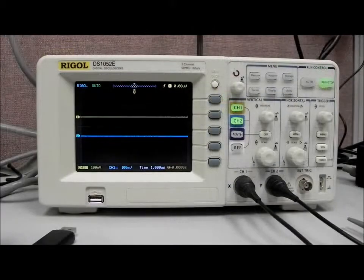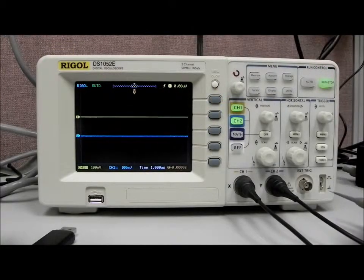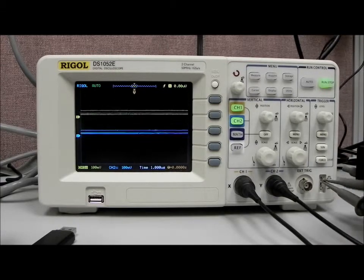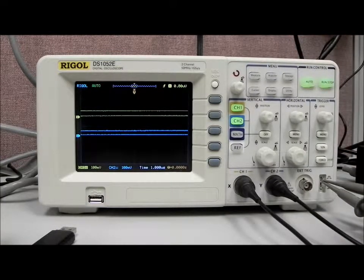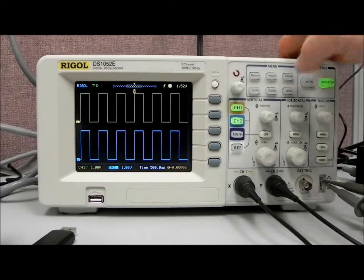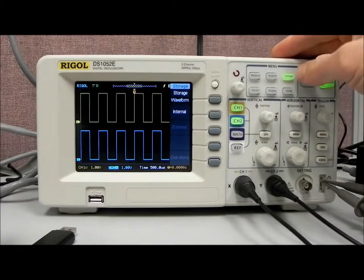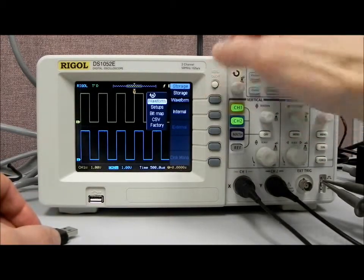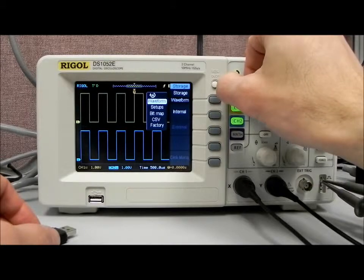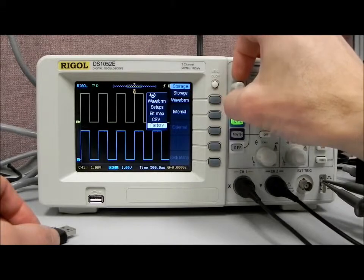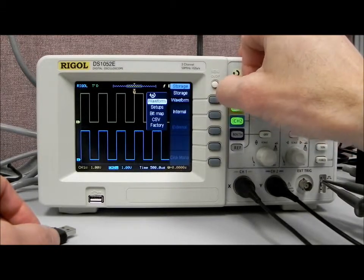I'd like to take a closer look at some of the storage capabilities of the DS 1000 series of scopes. I'm going to connect channel 1 and channel 2 to the square wave generator. I'm going to press auto, so now on this display we should see two square waves. Now let's say I wanted to store that particular waveform. I hit the storage key and now I have the storage menu.